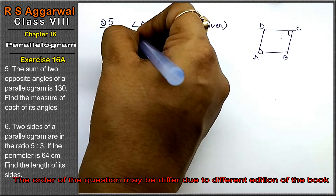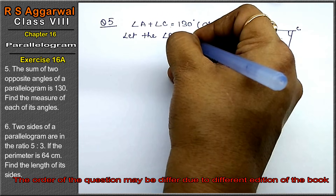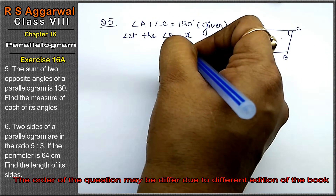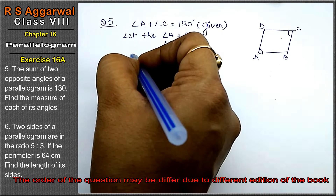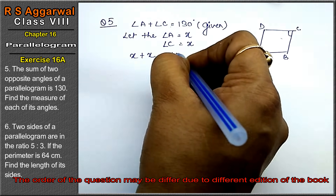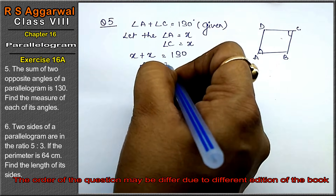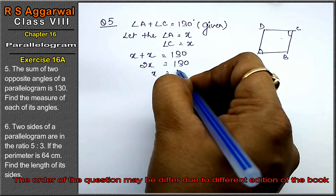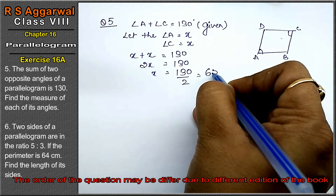Let angle A equal x. So angle C is also x. That means angle A plus angle C equals x plus x equals 130. So 2x equals 130, and x equals 130 divided by 2, that is 65 degrees.